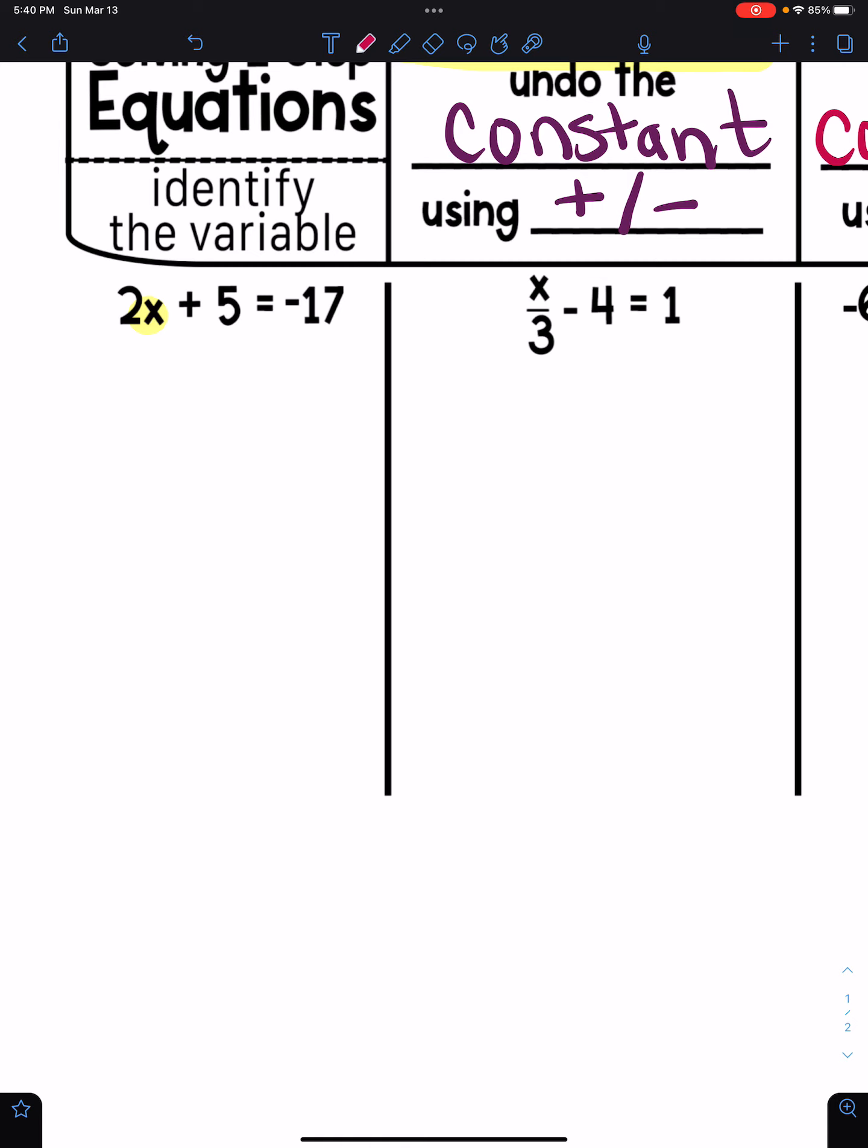And the order does matter. So I want to undo the constant first. The opposite of adding five is subtracting five. That's going to give me 2x equals negative 22. The next step is to undo the coefficient. The opposite of multiplying by two is dividing by two. So I get x equals negative 11.